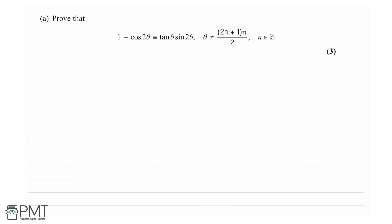We have been asked to prove that 1 minus cosine 2θ is identical to tanθ sine 2θ, where θ isn't an odd multiple of π/2 and where n is an integer. You have two ways to do this: go from 1 minus cos2θ to tanθ sin2θ, or go from tanθ sin2θ to 1 minus cos2θ. I'm going to choose the latter because I think it's easier.